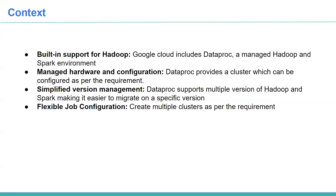The third benefit is simplified version management. It helps you migrate from on-premise to GCP Dataproc. For example, if you are using Spark 2.6 in your on-premise environment and want to move to Dataproc, Dataproc will provide that specific version of Spark. It will also let you move to a higher or lower version — say, if you want to use Spark 3.3, you can select that version and run your job there.